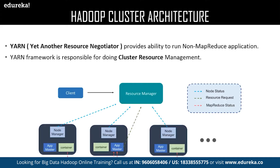Let us discuss each one of them. Node manager is a Java utility that runs as a separate process from the web logic server. It allows you to perform common operations for a managed server regardless of its location with respect to the administration server. The second one is app master — app master is responsible for negotiating the resources between the resource manager and node manager. The last one is the container — the container is a collection of a reserved amount of resources allocated from the resource manager to work with the task assigned by the node manager.